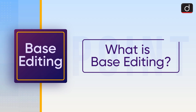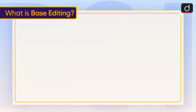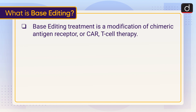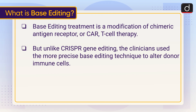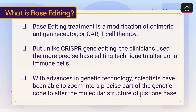Now let's discuss what is base editing. Base editing is a modification of chimeric antigen receptor, or CAR T-cell therapy. But unlike CRISPR gene editing, clinicians used the more precise base editing technique to alter donor immune cells. With advances in genetic technology, scientists have been able to zoom into a precise part of the genetic code to alter the molecular structure of just one base.